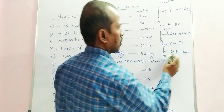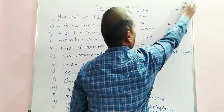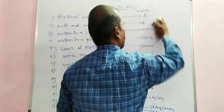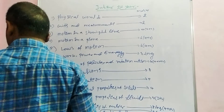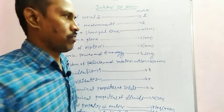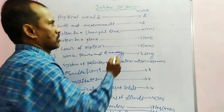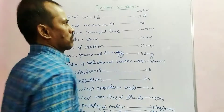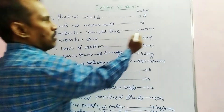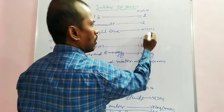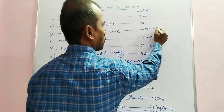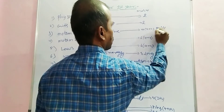For the topic Physical World, there is one short answer expected — the Raman Effect. For Units and Measurements, problems may come. For Motion in a Straight Line, 4 marks with 2 plus 2 — expect problems from this chapter.